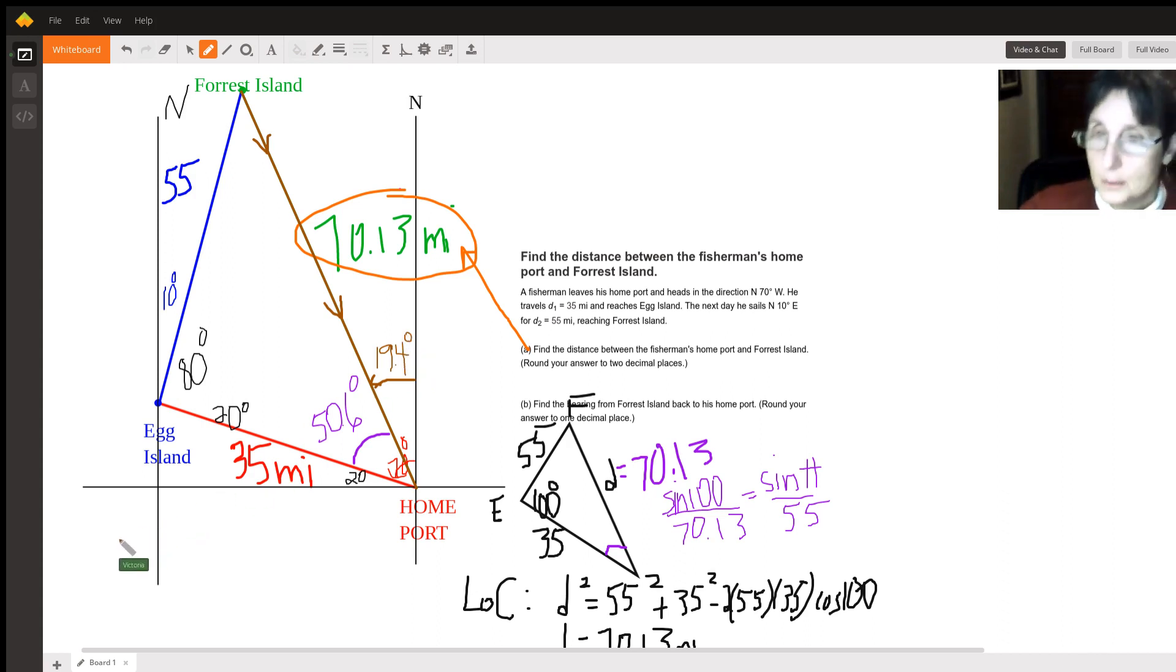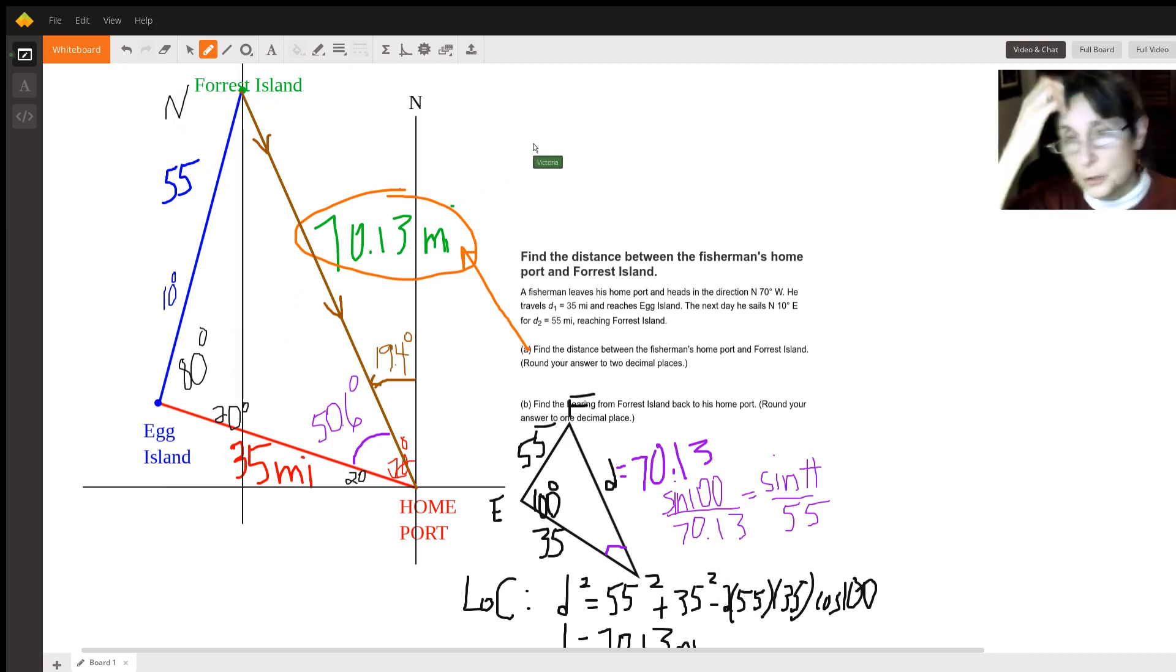Now how does that help me? Well, let's move this north over. If you will remember back to geometry, we said two parallel lines like these two norths, two parallel lines cut by a transversal means that these alternate interior angles, this one and this one are congruent, so this one is also 19.4 degrees.